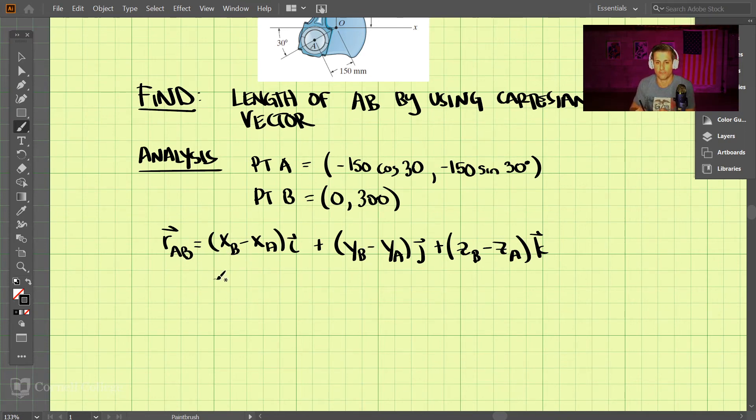So in the x direction here, we have point B is zero, and then we have minus a negative 150 cosine 30. So that's going to be in the i direction. And then for the j direction, let's make sure we separate these two. So that's the i direction. And then in the j direction, what do we have? So point B is 300, and then we subtract off the y, which is negative 150 sine 30 degrees. And that's the j direction.